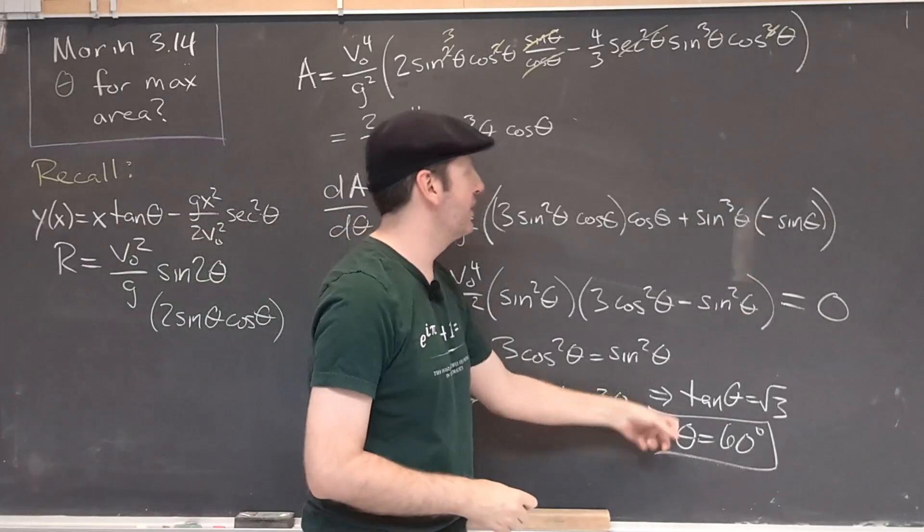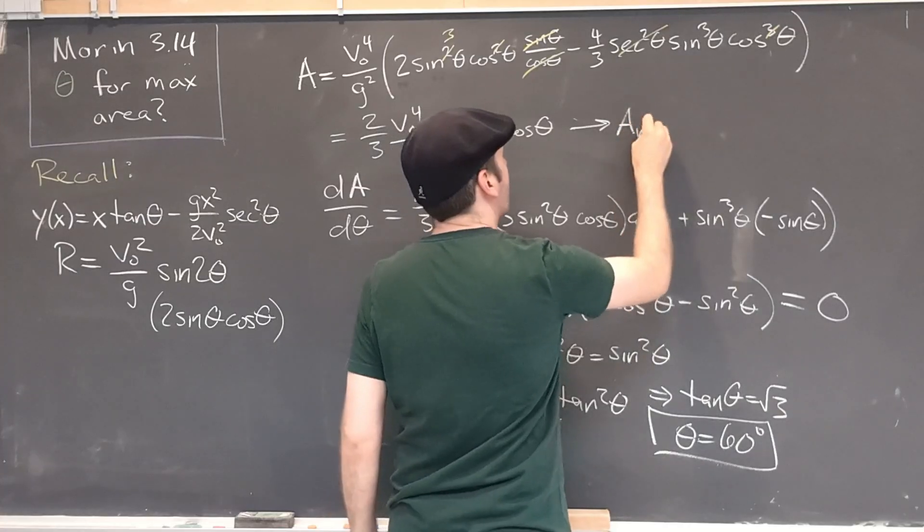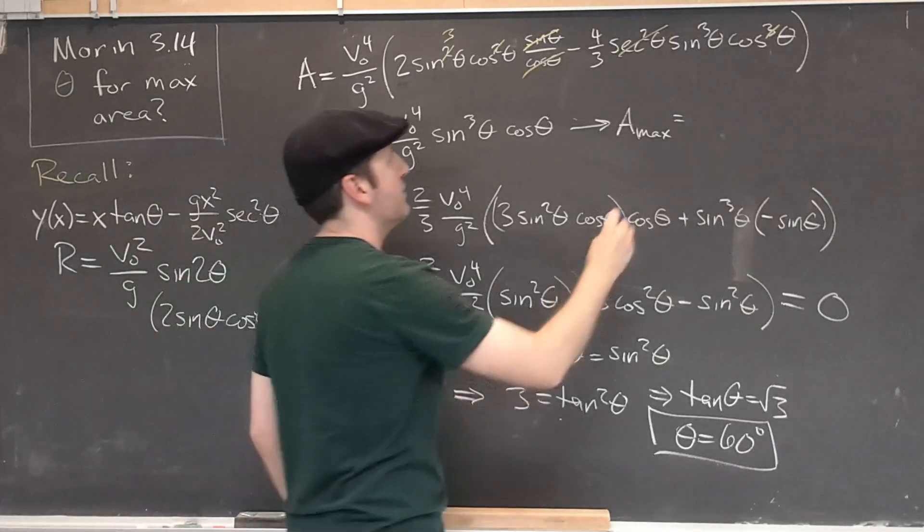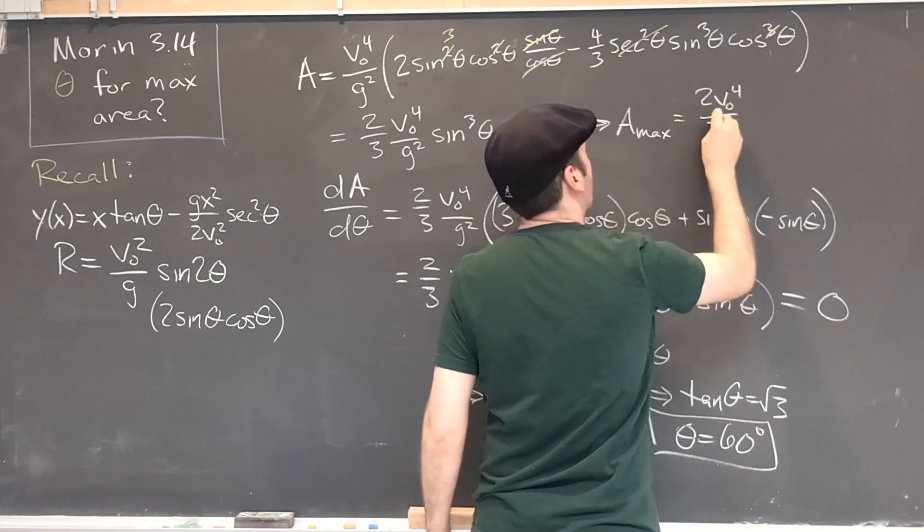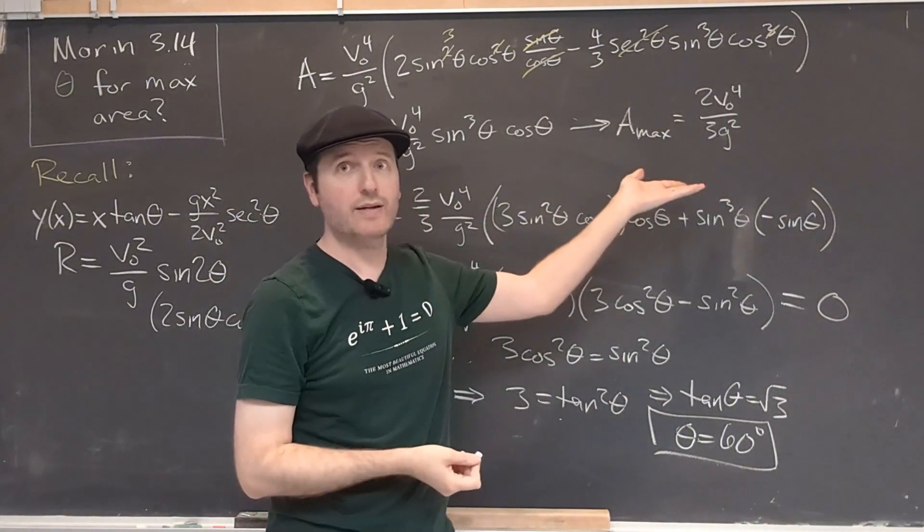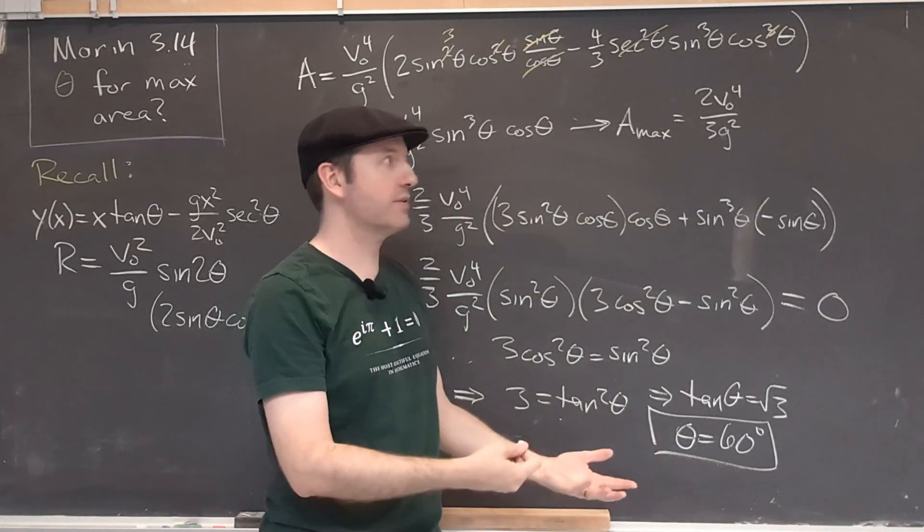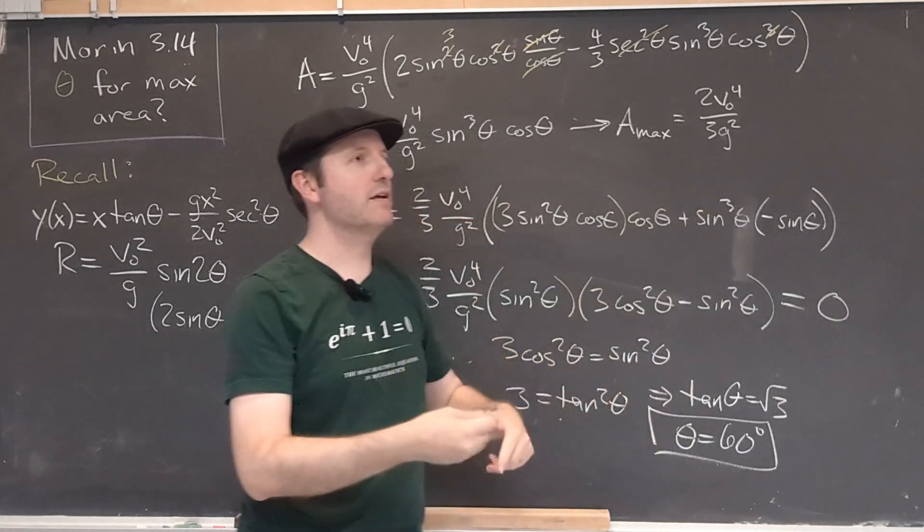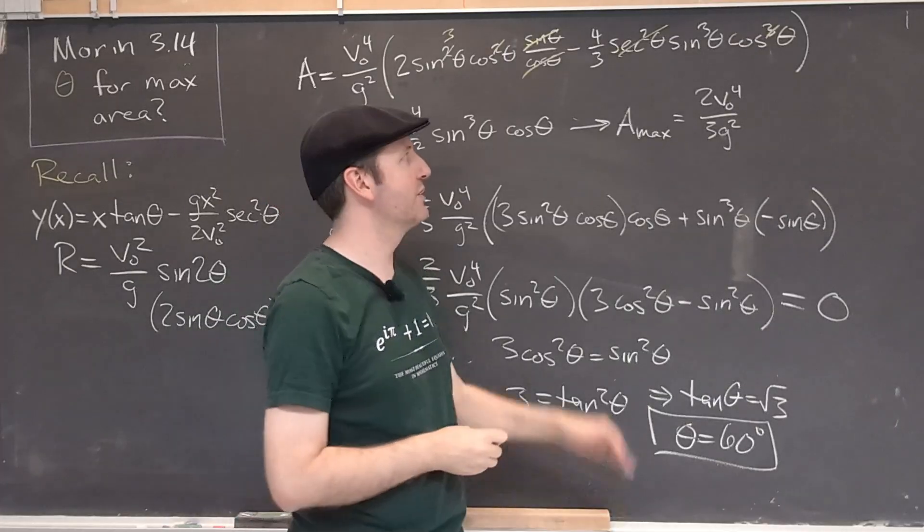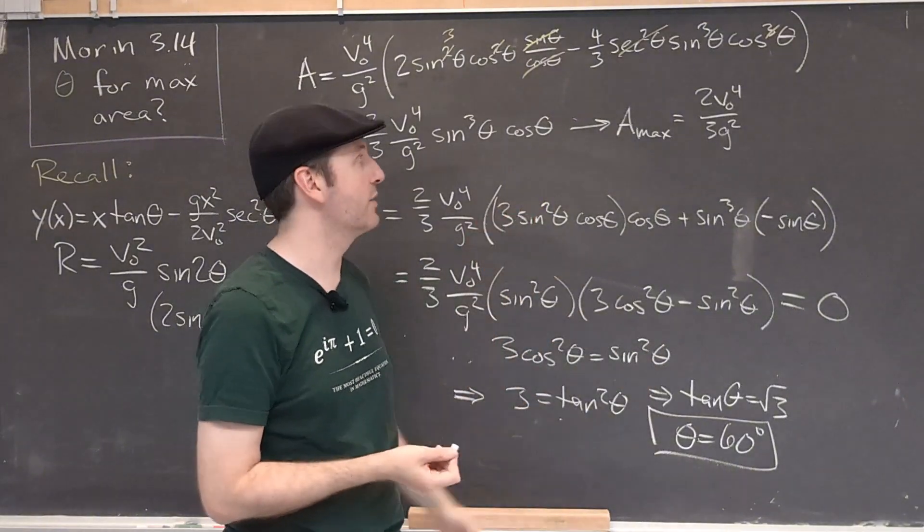And in fact, we can then go back and plug this 60 in to find out what is the maximum area. Notice that we have our 2 thirds out front, our usual constants. And it is a good check to make sure that this combination of constants does have the right dimensions. Length over time to the fourth divided by length over time squared squared cancels all the time units. And I end up with length over length squared, which is length to the fourth over length squared, which is length squared. That is what we want for an area.